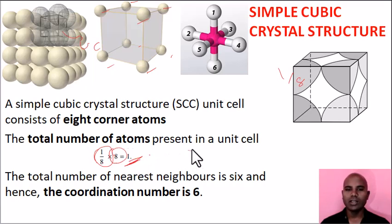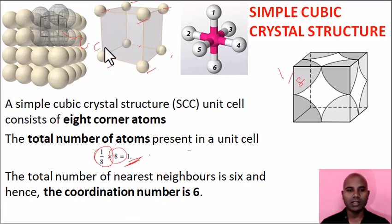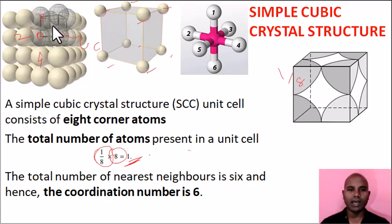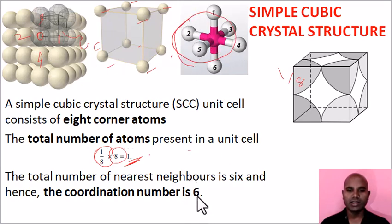For simple cubic, if you take any atom and count how many atoms are around it — you can see one, two, three, four, and front and back — so a total of six atoms. Therefore, the coordination number is 6. The number of neighbouring atoms is 6.